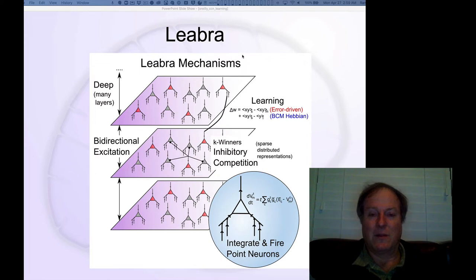The network level mechanisms include bidirectional connectivity, which supports and is essential for both error-driven learning and top-down imagery, constraint satisfaction, and attractor dynamics. All those critical principles are supported by bidirectional connectivity, so we see a synergy across the learning and activation space.